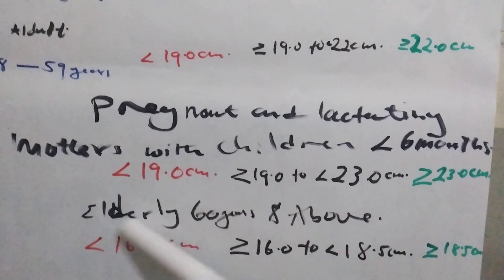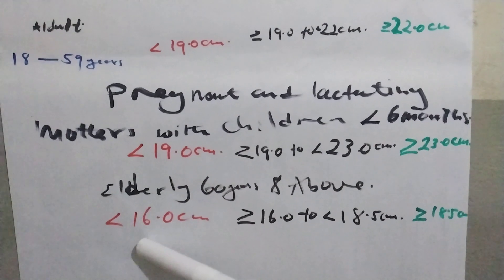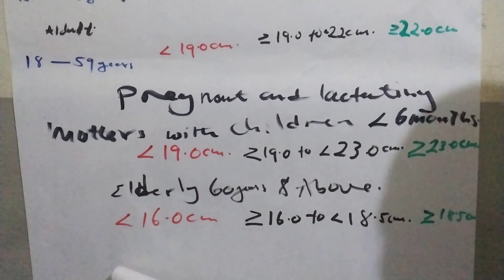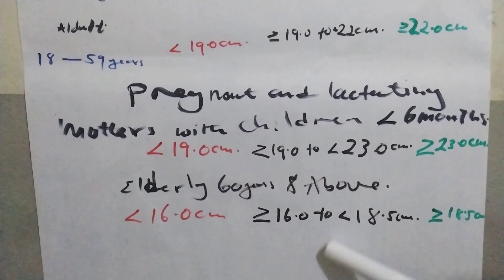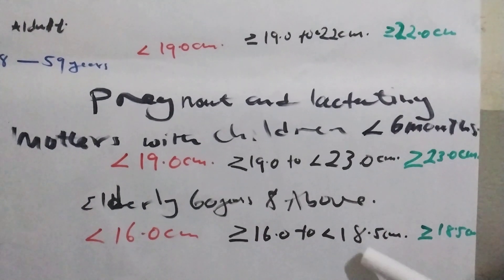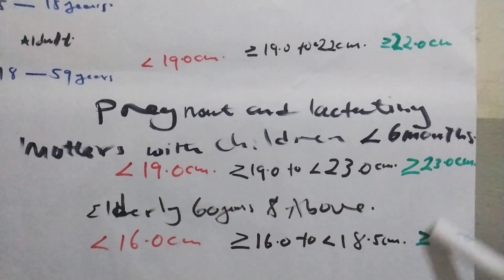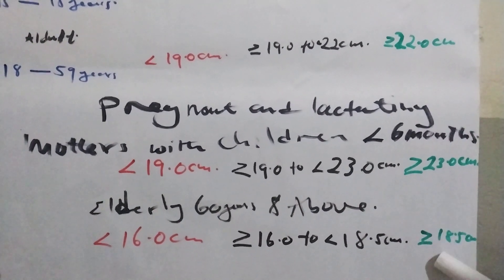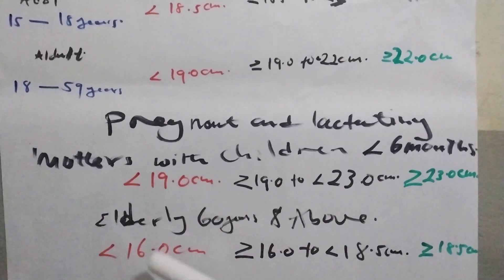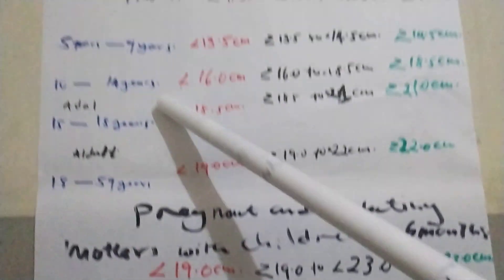For the elderly, aged 60 years and above: severe acute malnutrition is less than 16.0 centimeters. Moderate acute malnutrition is 16.0 centimeters to 18.5 centimeters. Normal is greater than 18.5 centimeters. Note that the elderly cut-offs are the same as for the 10 to 14 year age group.